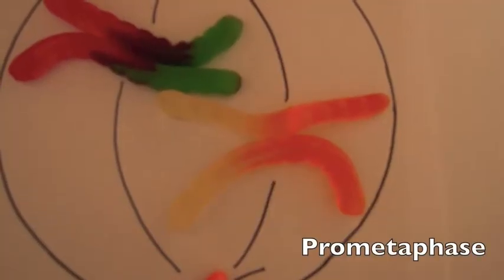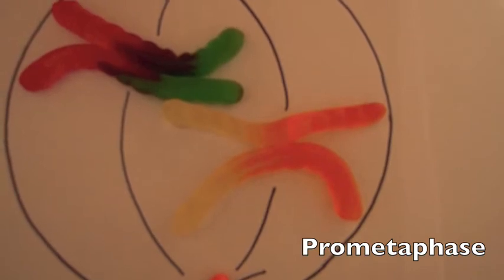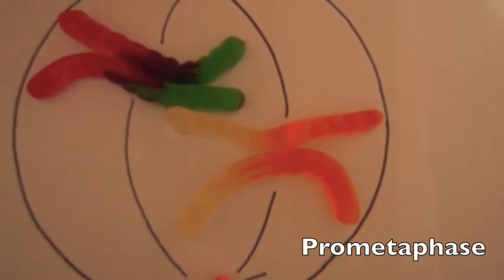After prophase comes prometaphase. In prometaphase, the nuclear envelope fragments and centrosomes begin moving to opposite poles, which allows for the formation of spindle fibers.